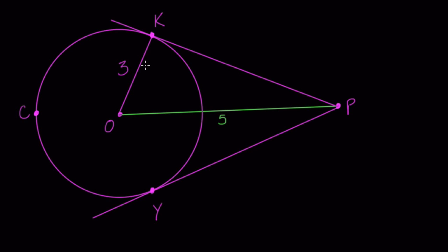Our goal is to find the length of KP and PY. We should know that KP is tangent to circle O and so is PY. Tangent means a line intersects the circle at a point — you see those points K and Y. Furthermore, if you draw a radius from the center of a circle to a tangent, you get a right angle.